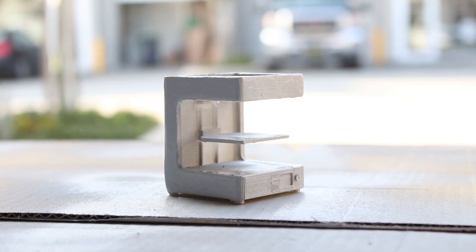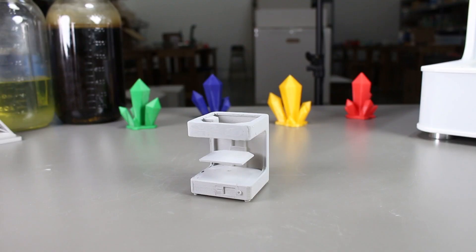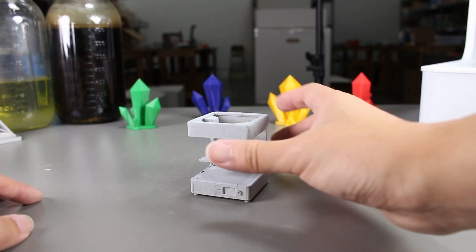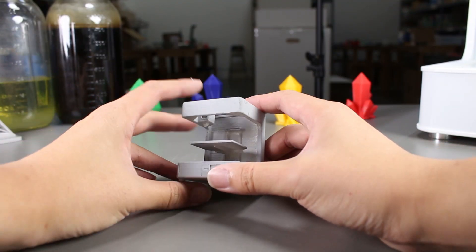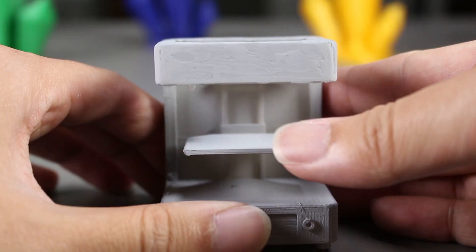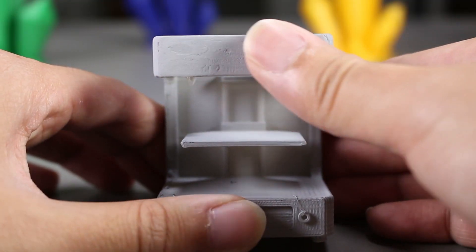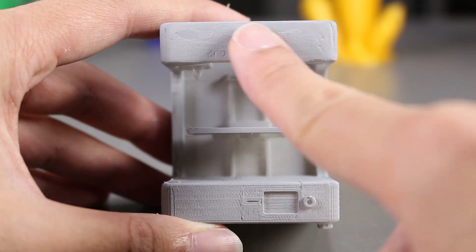After it dries up, we can take a closer look at it. Let's see. It looks pretty good so far. We can clearly see the difference here. The top part was filled with the filler, but the bottom was left as it was. And you can still see the lines.